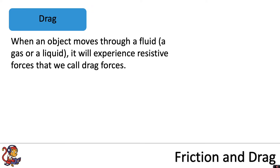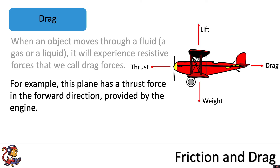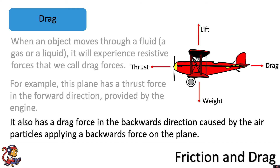When an object moves through a fluid, which is a gas or a liquid, it will experience resistive forces that we call drag forces. For example, this plane has a thrust force in the forward direction provided by the engine, but it also has a drag force in the backwards direction caused by the air particles applying a backwards force on the plane.